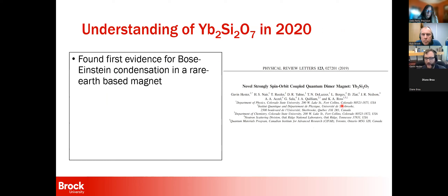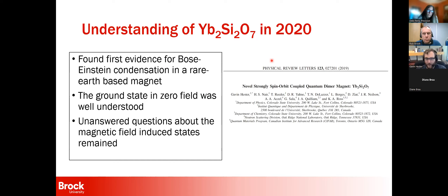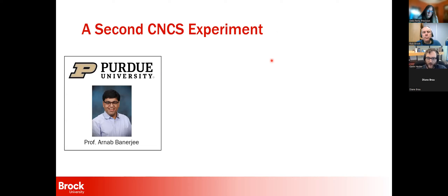This was everything up to 2020, published in our Physical Review Letters paper in 2019. We found the first evidence for Bose-Einstein condensation in a rare-earth-based magnet — the rare earth being ytterbium. The ground state at zero field we understood pretty well — pretty confident it was a quantum dimer magnet — but we still had unanswered questions about the magnetic field-induced states. To answer that question, we decided to perform a second CNCS experiment.